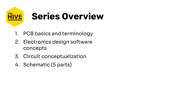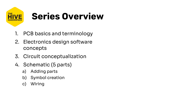The schematic capture will be broken down into five parts. 4a will introduce the schematic capture view as well as adding parts to that schematic. 4b will talk about symbol creation. 4c will talk about wiring and connecting your components together. 4d will be assigning footprints to the various symbols. And finally part 4e will cover the ERC, or the electrical rules check.